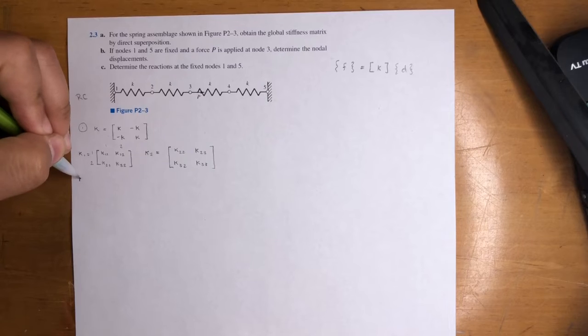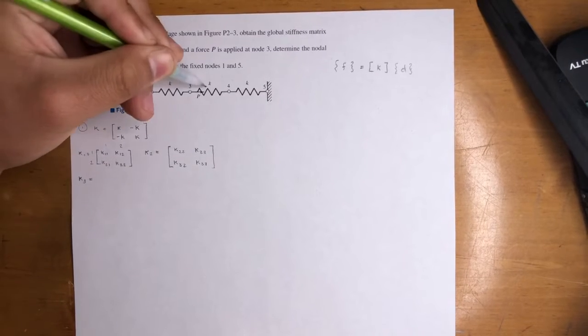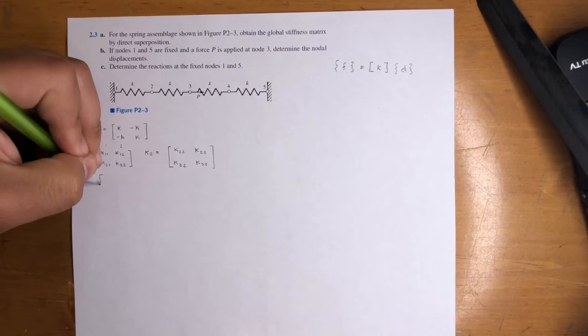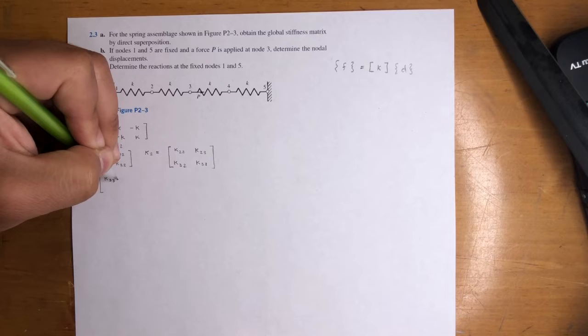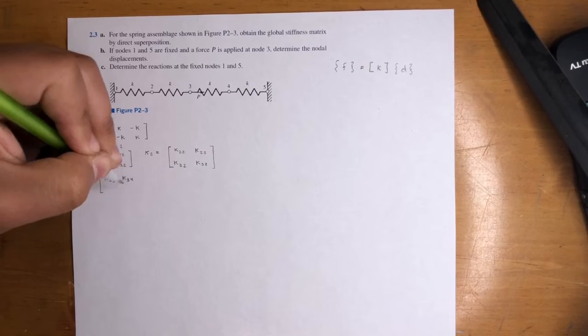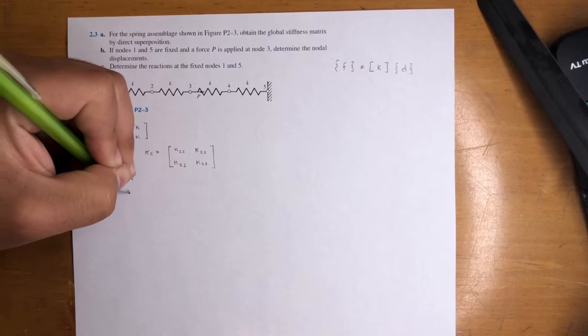So that's that one, K3, right? The third one. It's going to be K, it's between 3 and 4. So it's K33, K34, K43, K44.